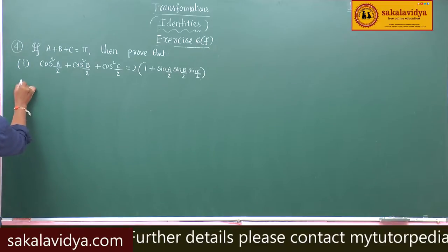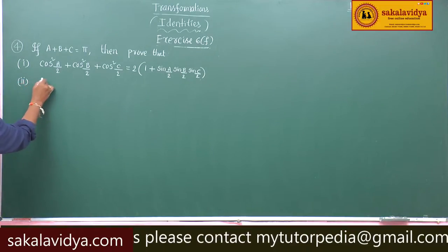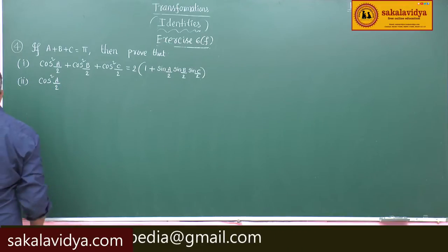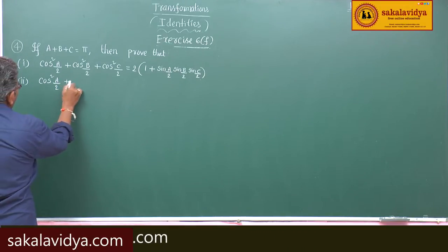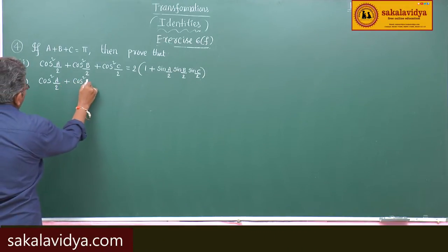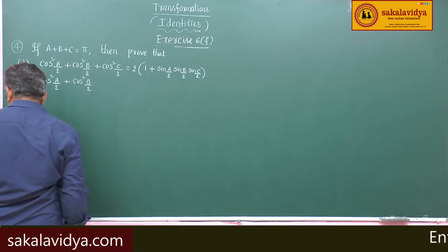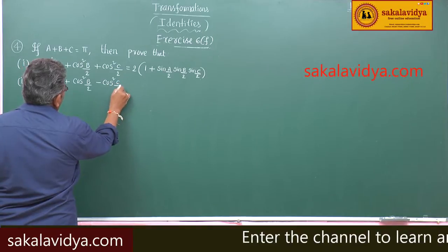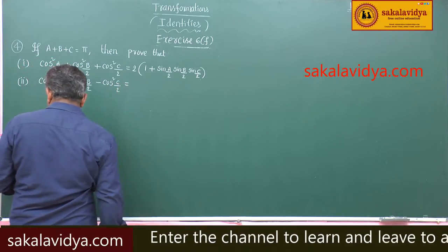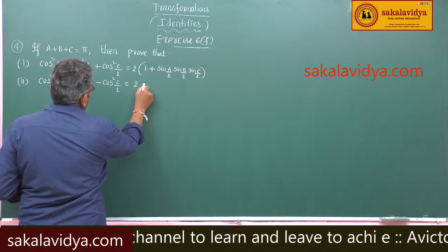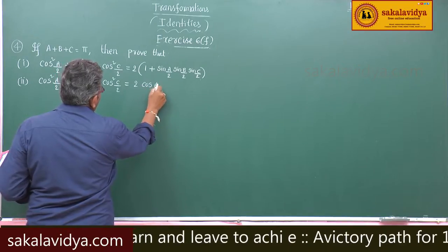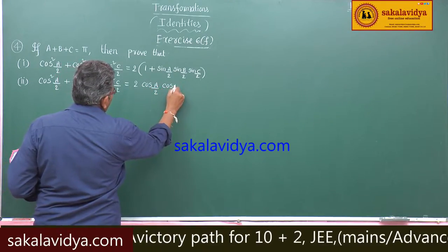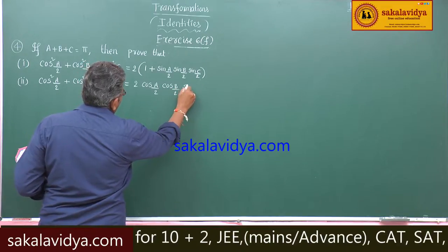The second problem: cos squared a by 2 plus cos squared b by 2 minus cos squared c by 2 is equal to 2 cos a by 2 cos b by 2 sin c by 2.